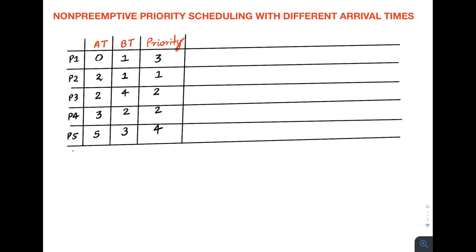In this video we are going to look at an example of non-preemptive priority scheduling with different arrival times. We already looked in the last video at what priority scheduling is and the two types: preemptive and non-preemptive. In this video I am taking an example of non-preemptive priority scheduling where all processes have different arrival times. We need to calculate average turnaround time, average waiting time, average response time, throughput, and CPU utilization.